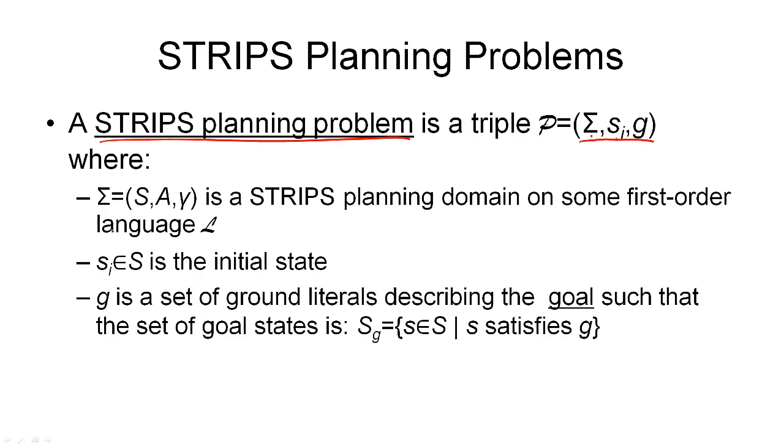So, what are these formally? The first is a STRIPS planning domain that is defined over some first order language we've seen earlier. And again, we have the state space here, the action space, and the state transition function, as we've seen in the previous slide.